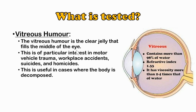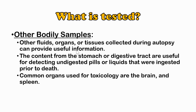Other bodily fluids, organs, or tissues collected during an autopsy can also provide useful information. The contents of the stomach or digestive tract are useful for detecting undigested pills or liquids ingested prior to death. Common organs used for toxicology testing are the brain and the spleen.